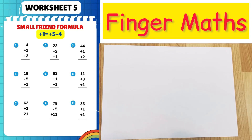Bug sheet 5. Small friend formula. Plus 1 equals plus 5 minus 4.